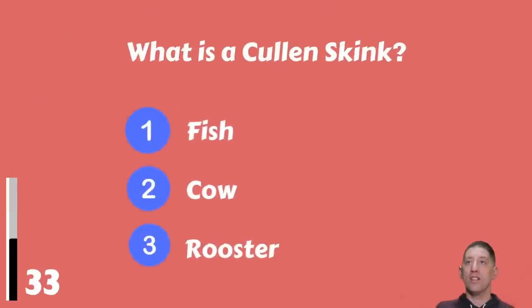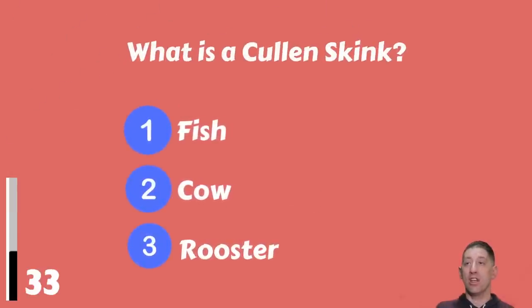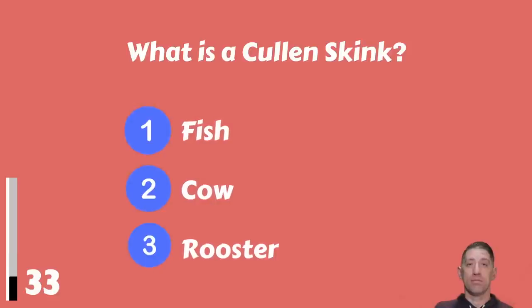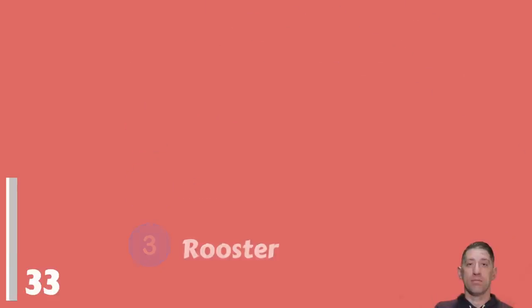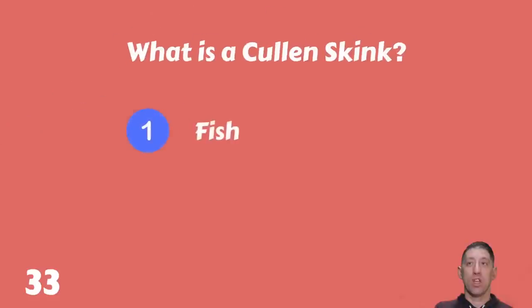What is a Cullen skink — a fish, a cow, or a rooster? The answer is a fish.